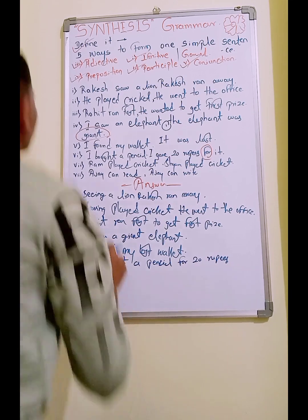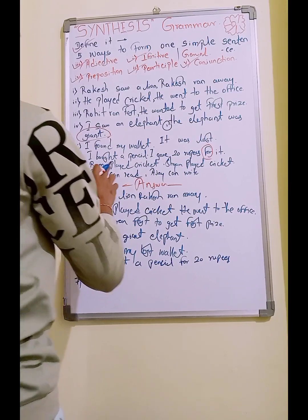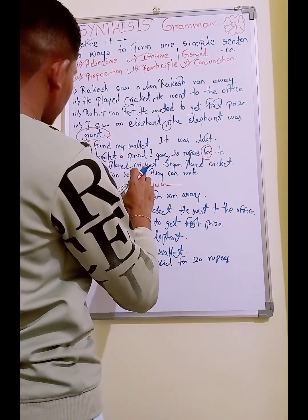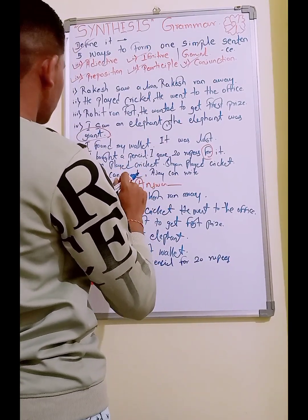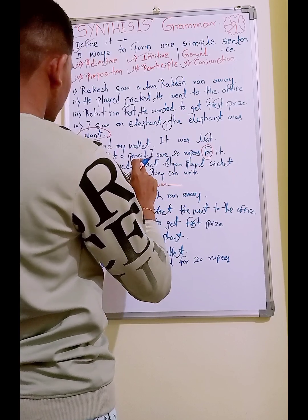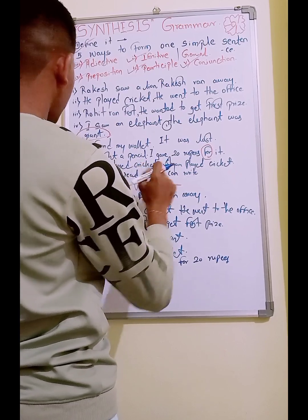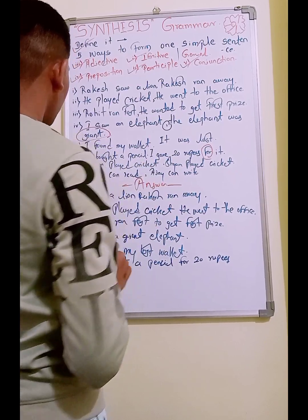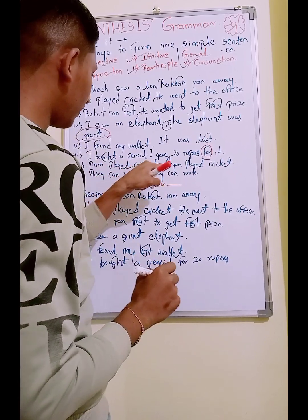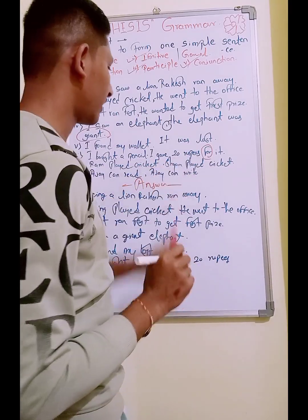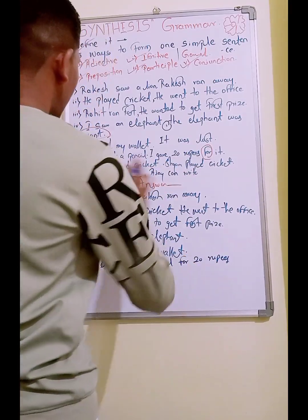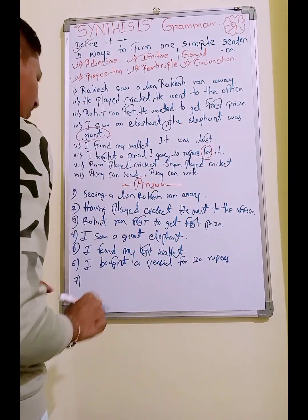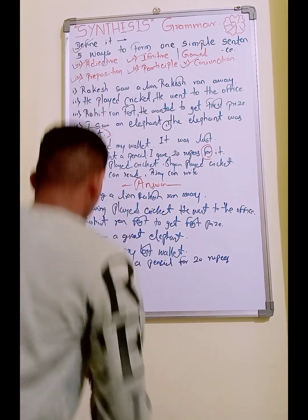Seventh one: 'Ram played cricket. Sham played cricket.' Using a conjunction: 'Ram and Sham played cricket.' This is the connection using conjunction.